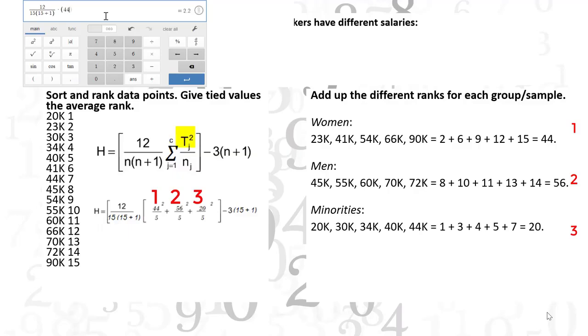T sub j is the sum of ranks in the jth sample. For example, for women, the sum of ranks was 44.